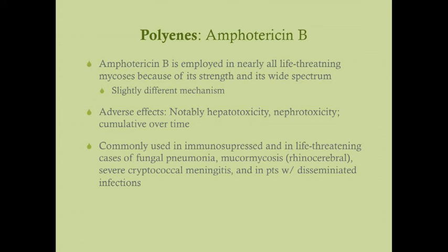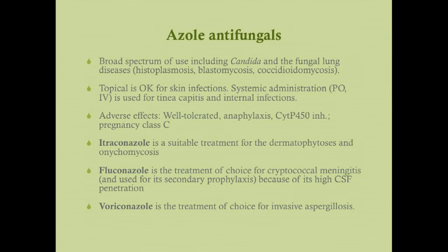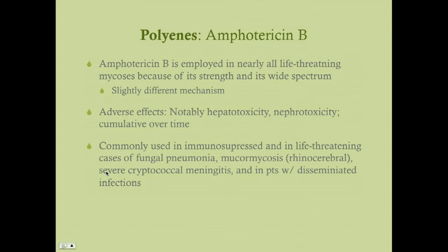Amphotericin B is generally reserved for life-threatening mycoses. It's used in life-threatening fungal pneumonia, mucormycosis (a fungal infection of the respiratory tract, particularly the upper respiratory tract), cryptococcal meningitis, and disseminated infections. Note that fluconazole is our drug of choice for cryptococcal meningitis, but in refractory cases we go ahead and use amphotericin B.